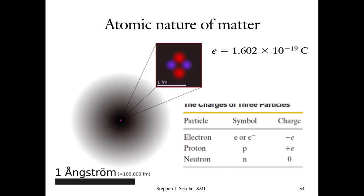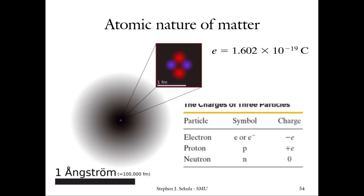The electron possesses negative E, or negative 1.602 times 10 to the minus 19 coulombs. Protons possess plus E. The nuclei of atoms also contain neutrons, which possess no net electric charge — neither positive nor negative. This is just a cartoon depiction of an atom. In reality, the whole atom with its electron cloud is roughly one angstrom, or 10 to the minus 10 meters in size, while the nucleus is about 1 femtometer, or 10 to the minus 15 meters — the atom is about 100,000 times the size of the nucleus.